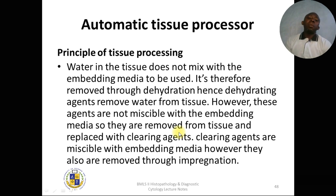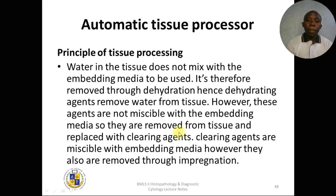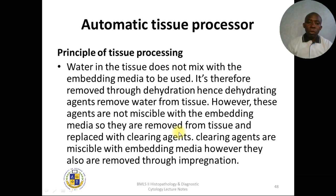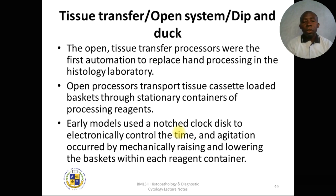Recalling the principle of tissue processing: the major goal is to remove water from the tissue, which does not mix with embedding media. Dehydrating agents remove water, but they are not miscible with embedding media, so they are replaced with a clearing agent — xylene. Clearing agents are miscible with embedding media but are also removed through impregnation to achieve homogeneous sections.